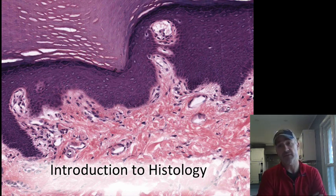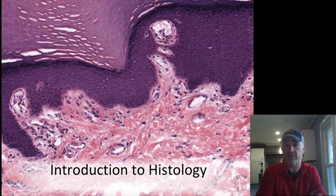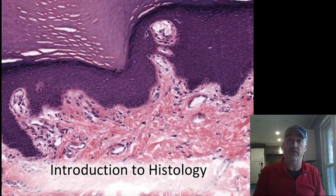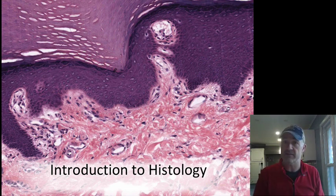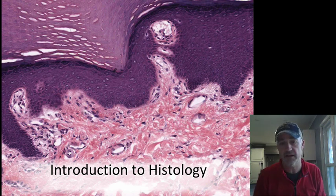After getting through the introductory material and basic cell structure, we are going to work our way through the different tissue types, and then a good number of body systems. We'll go through them system by system and talk about some of the key parts of each system and how to identify them histologically.